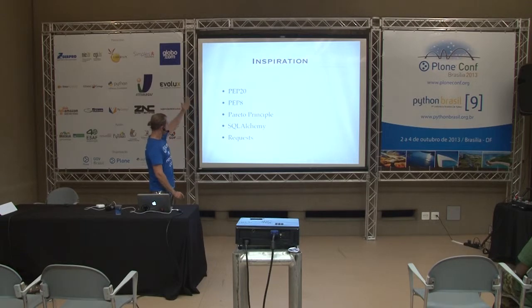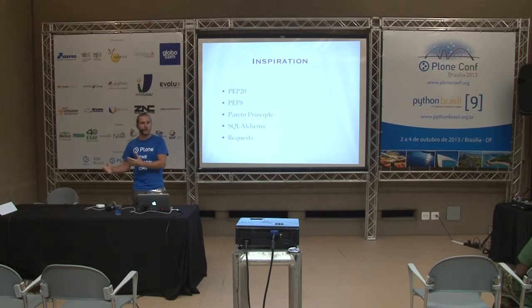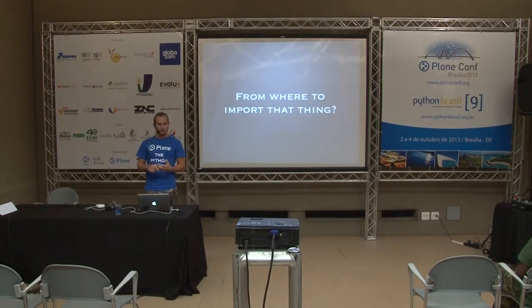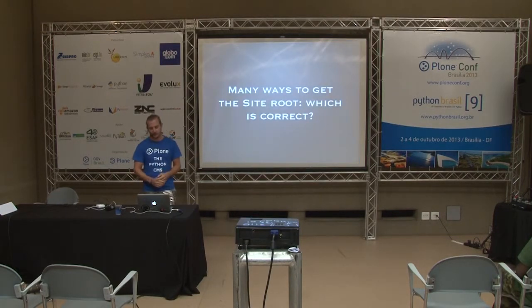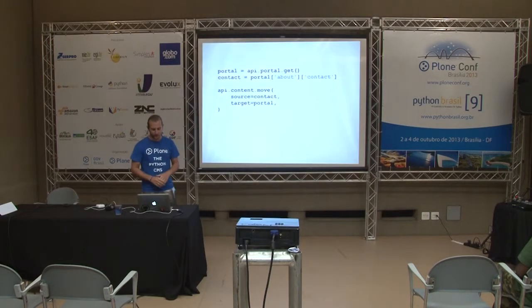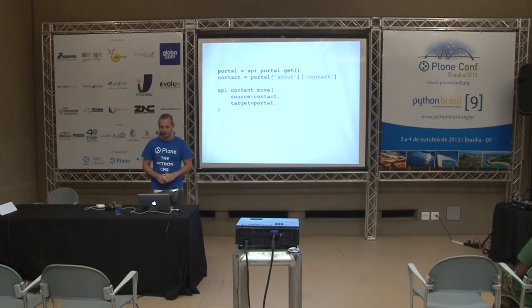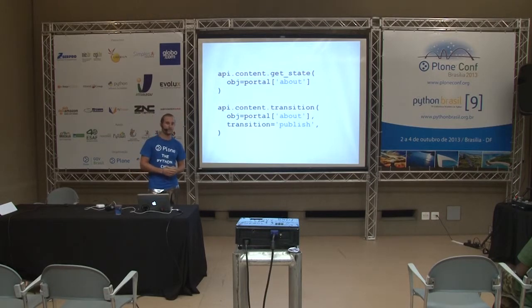The inspiration for Plone API came from fine documents and principles. We took a look at libraries we thought were doing it good and tried to model after them. With the Plone API, from where to import that thing, you always do: from plone import api - that is the only import line you have to memorize. Coming to how to get the site root, it's api.portal.get. Copying and moving objects instead of a chunk of code - you have api.content.move or api.content.copy and just give it a source and a target. The workflow state, instead of four lines, you have api.content.get_state or transition.